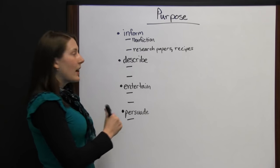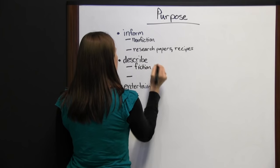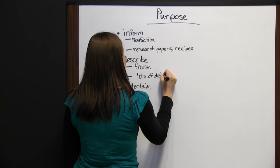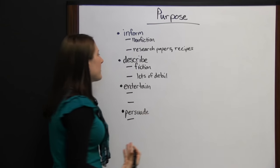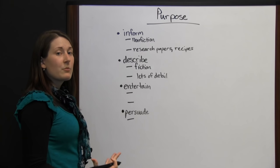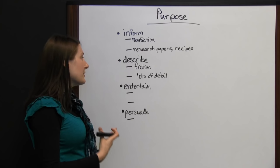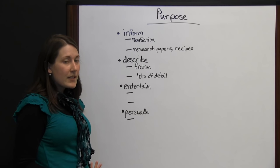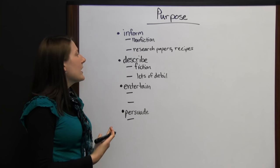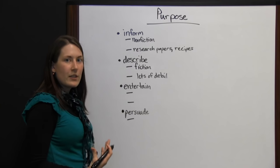If the author's purpose is to describe, it will probably be fiction with lots of details. A descriptive story or paper is going to elaborate on details and give you as much description as possible. While informational writing also has details, it's not the same kind of details you'd get in a descriptive fictional narrative.